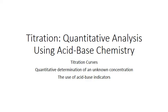Another important application of acid-base chemistry is titration. Titration is a chemical laboratory technique that relies upon pH changes that occur when acids and bases neutralize each other to determine the concentration of an unknown solution. In this presentation we'll discuss titration curves, the quantitative determination of an unknown concentration, and the use of acid-base indicators in titrations.